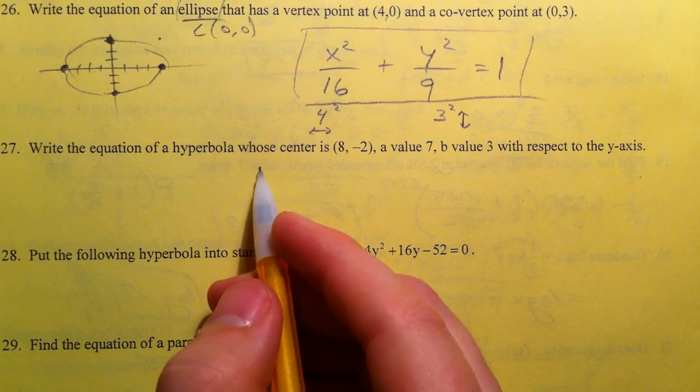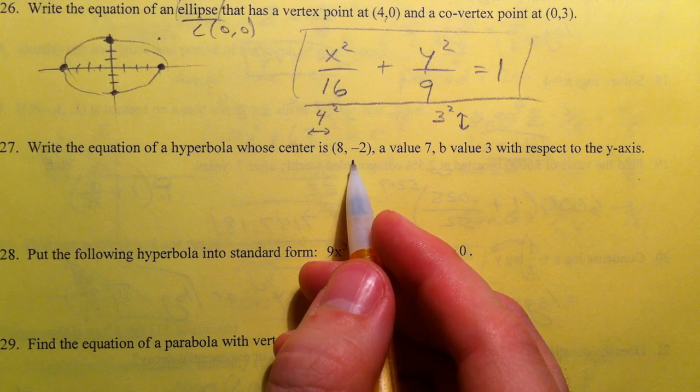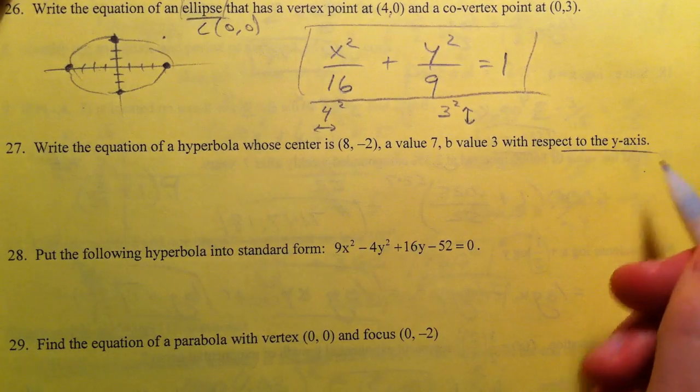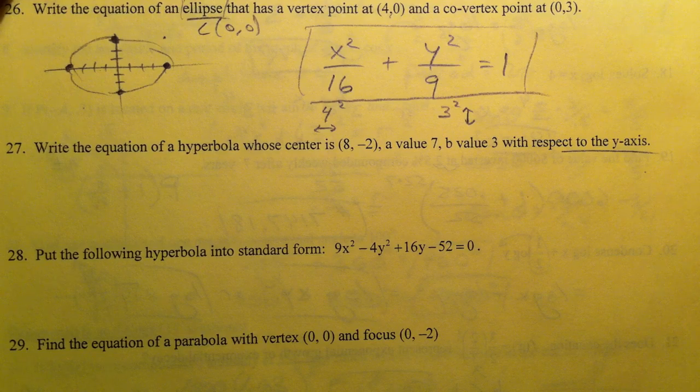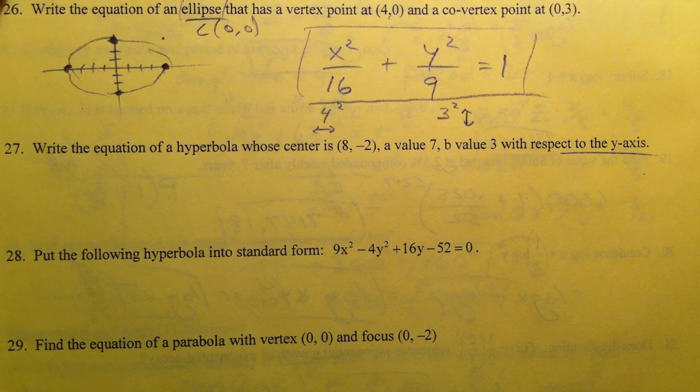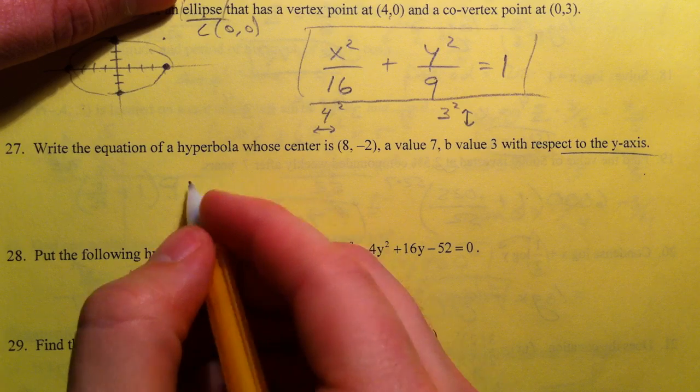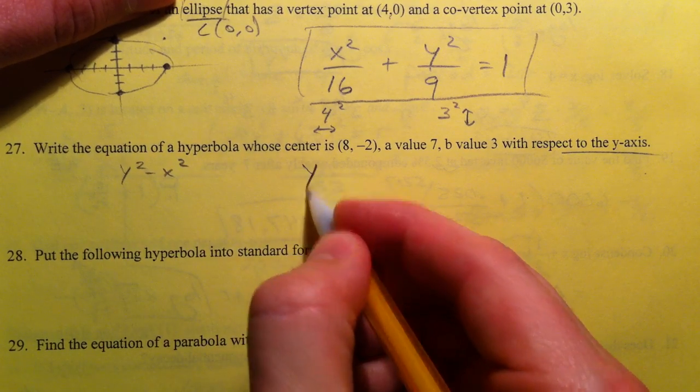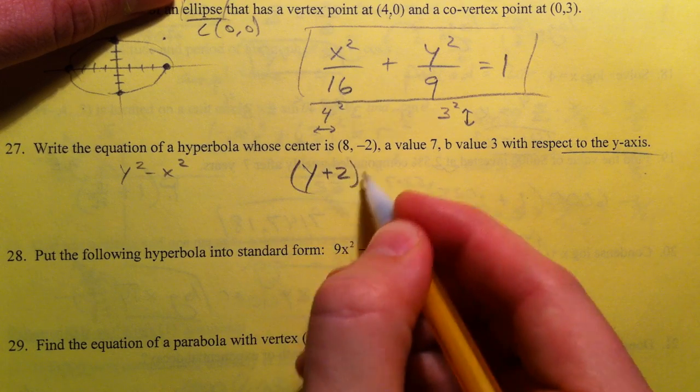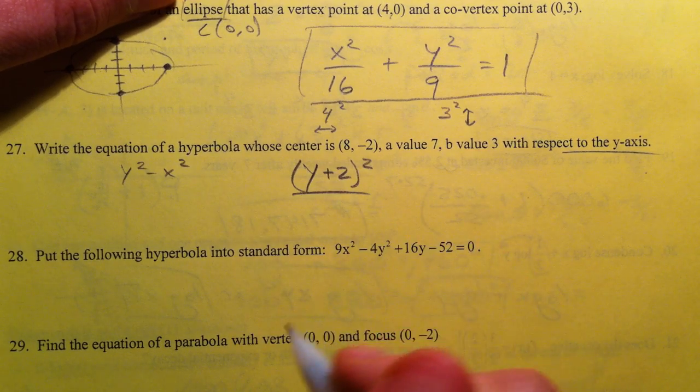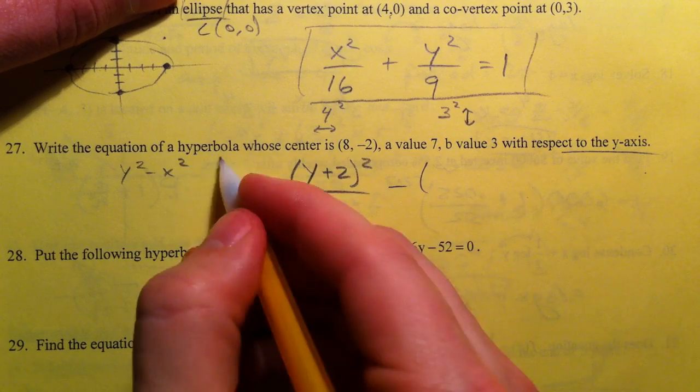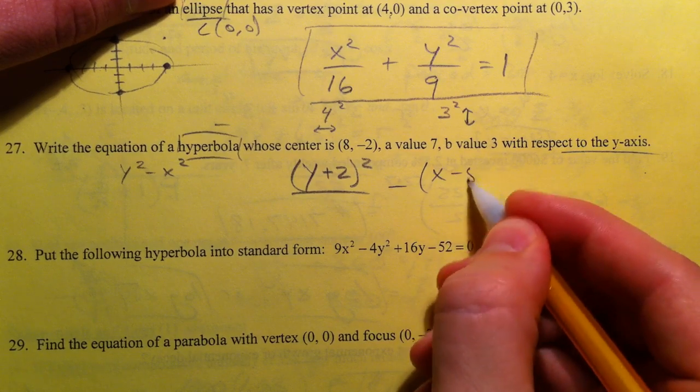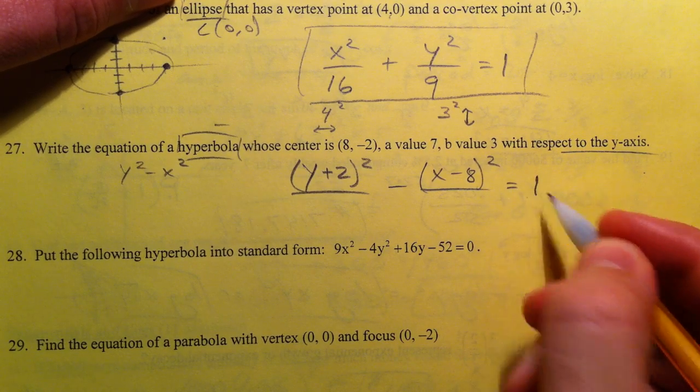Write the equation of hyperbola whose center is 8 negative 2 and so we're going to have and we want it to be with respect to the y axis. And so it's going to be a y squared minus x squared equation so I'm going to put y minus a negative 2 or y plus 2 squared minus because it's hyperbola x minus 8 squared equals 1.